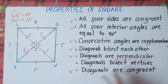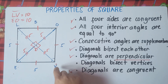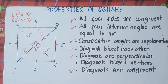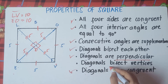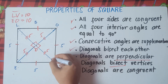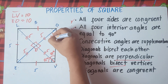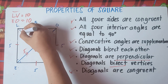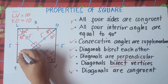Last property: diagonals bisect the vertices. This means the diagonal cuts each vertex angle into two equal parts. Since each interior angle is 90 degrees and the diagonal bisects it, each resulting angle is always 45 degrees. So at vertex V and vertex L, the diagonal creates two 45-degree angles — 45 plus 45 equals 90.